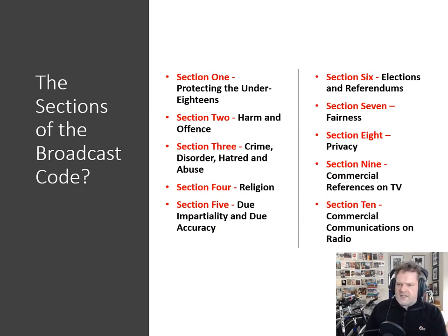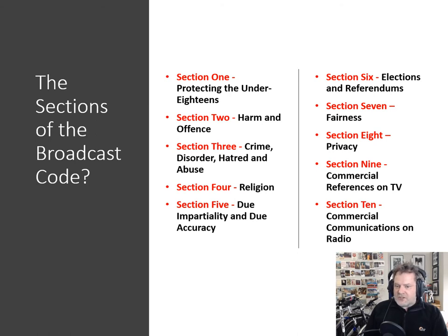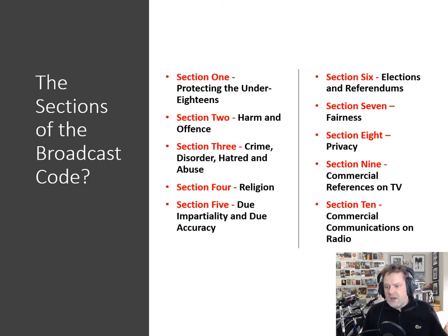The sections under the code — at various times different ones are more relevant than others. Section 1 is protecting the under-18s (slightly different wording because 16 to 18 year olds are not necessarily classed as children but still have fewer legal rights). Section 2 is harm and offence. Section 3 is crime, disorder, hatred, and abuse. Section 4 is religion. Section 5 is due impartiality and due accuracy. Section 6 is elections and referendums — important because there are elections taking place over the next few weeks and months. Section 7 is fairness. Section 8 is privacy. Section 9 is commercial references on TV (we can ignore that), and Section 10 is commercial communications on radio.